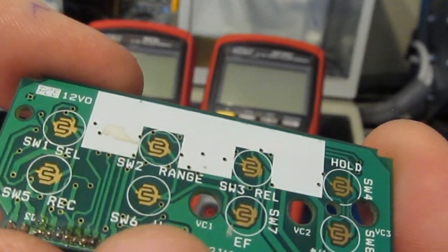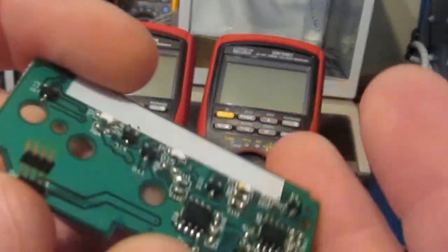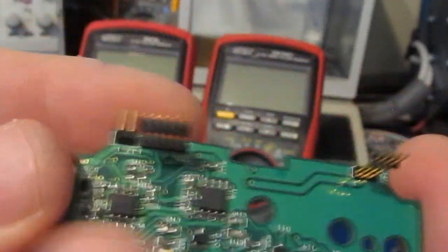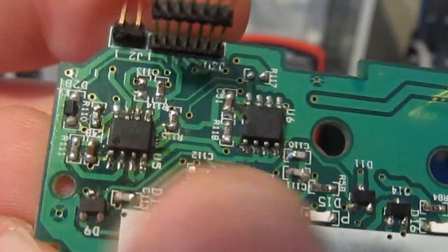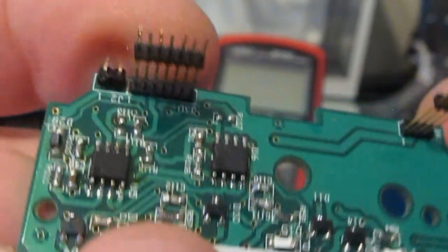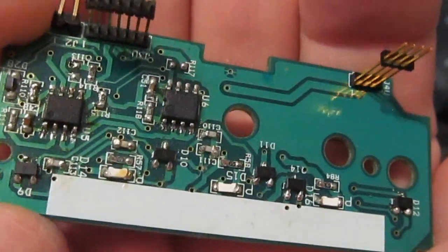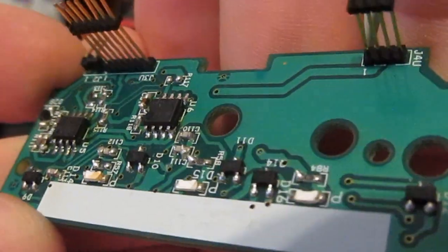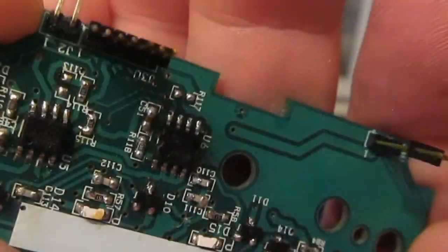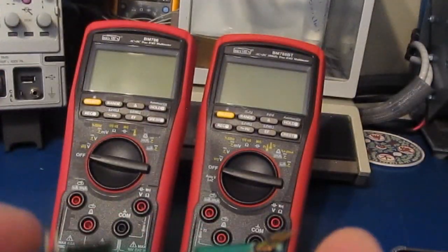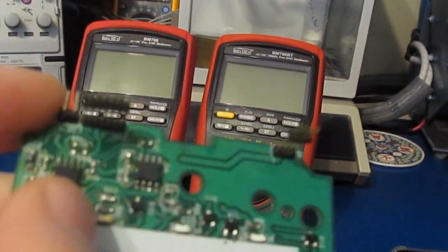But you'll notice on the back side of this circuit board there are two eight pin SOIC ICs. You can see on this board, maybe if it shows up well enough in the camera, this board was actually hand soldered by Brymen. So very old circuit board.